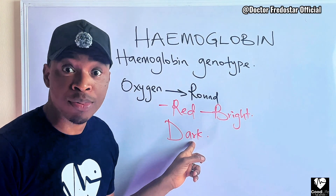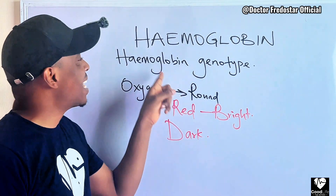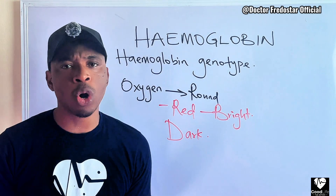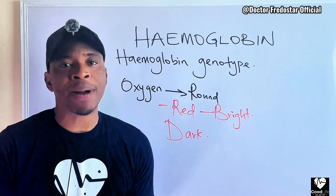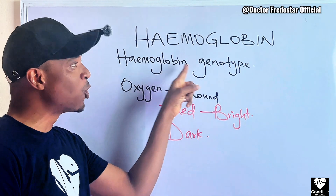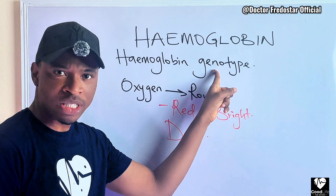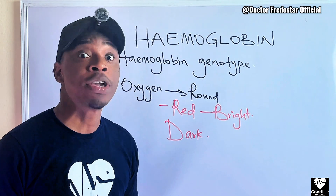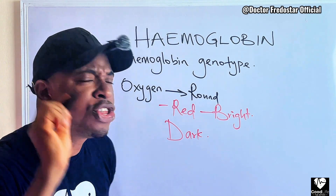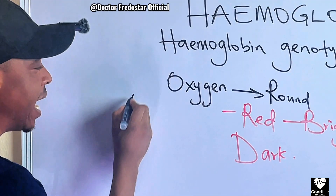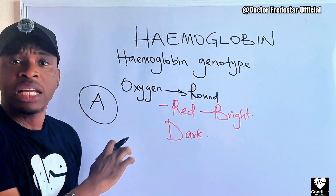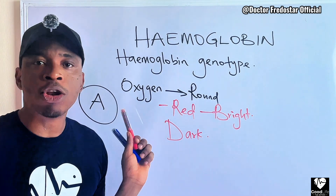When we check your genotype, we are checking your hemoglobin genotype. So when you say, 'Doctor, I want to check my genotype,' what we are checking for you is your hemoglobin genotype. The normal hemoglobin genotype — this is the normal one.